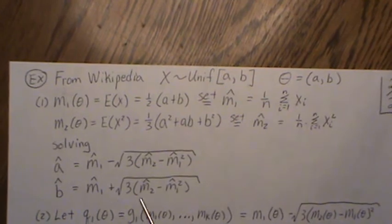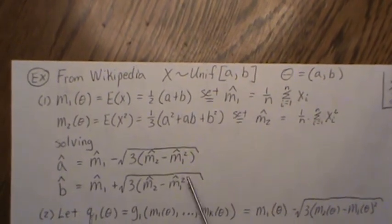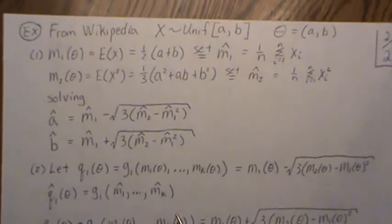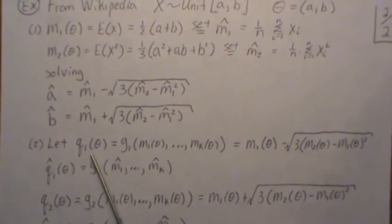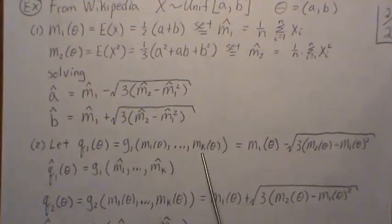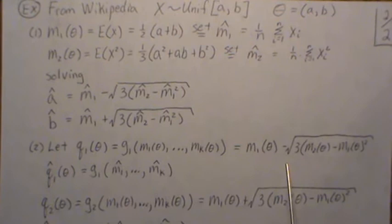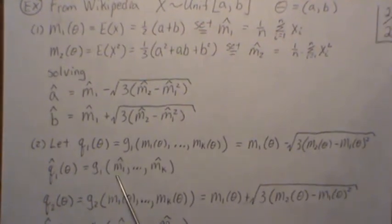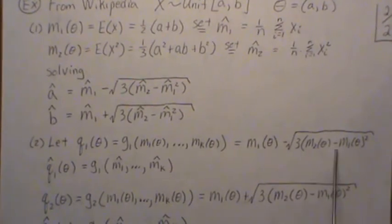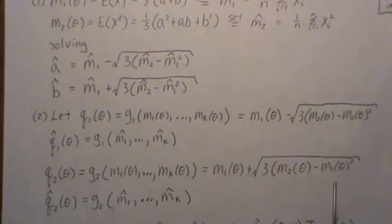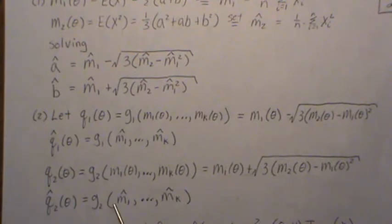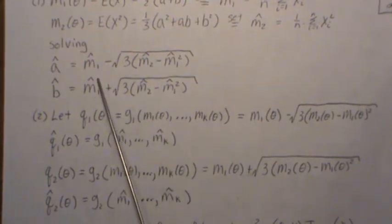From here you back solve for a and b, and you would get this, but then you have to plug in the sample moments. Then â and b̂, these are the method of moments estimates for a and b. Remember in situation two you could have also thought about it like this: that we created a function of the population moments to be this, then we estimate this function by plugging in the sample moments. When we plug in the sample moments we get this back. Both ways to think about it are equivalent. We could have created another function of the population moments, and then we estimate it using the same function but plug in the sample moments. That's what would have generated this. It's just two different ways to think about it, but they're identical.